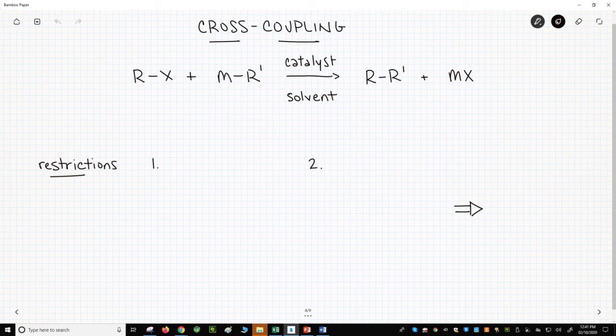Across the top of the screen is a very simple reaction. As written, the reaction implies that we have some kind of organic halide, X equals a halogen, reacting with some kind of organometallic.